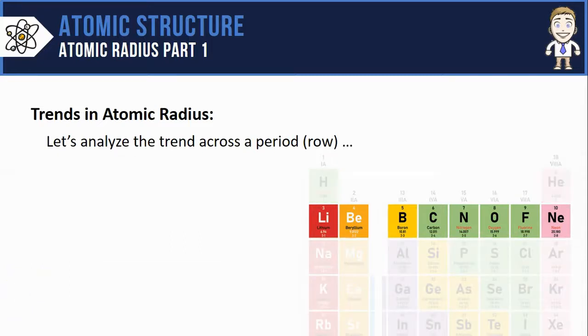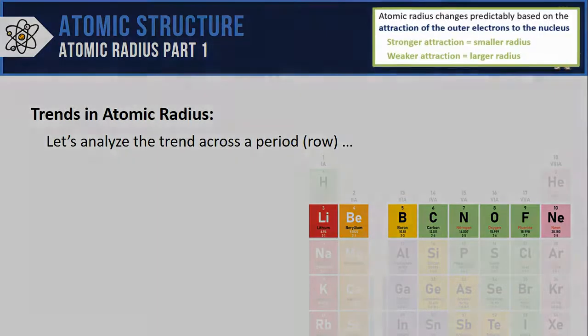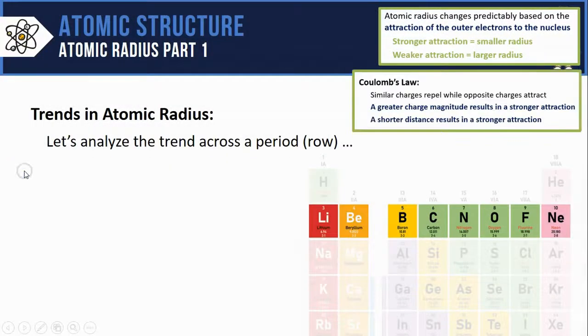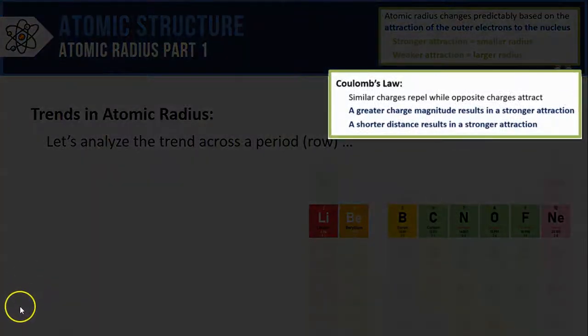Everything we say for row 2 will be true for all the other rows on the periodic table also. Before we get started analyzing the trend, I'm also going to bring back two older pieces of information. One from the start of this video on how to make predictions about an atom's radius. The other is from the previous video on Coulomb's Law.